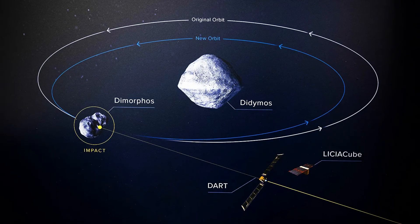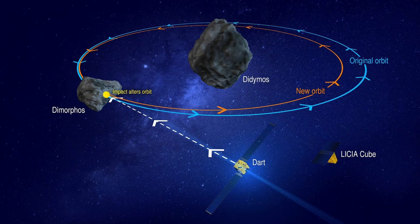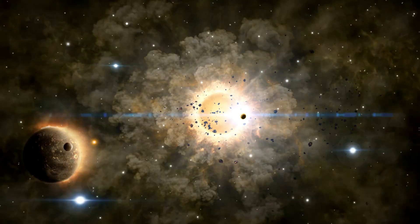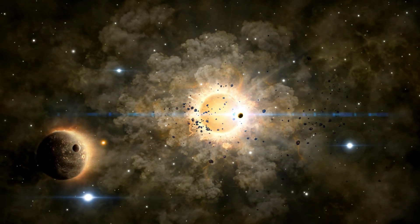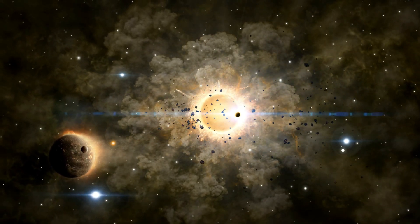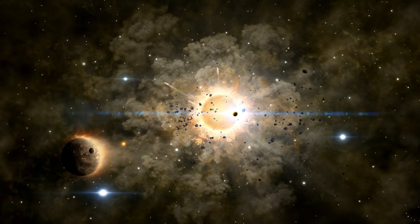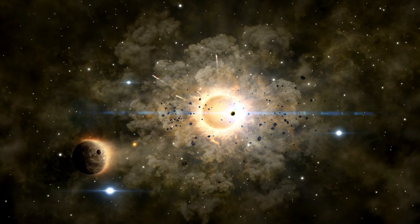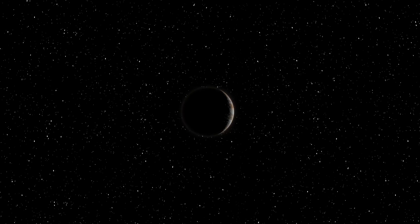NASA's DART mission in 2022 proved we can nudge an asteroid off course, but only if we spot it in time. And that's the scary part. Thousands of space rocks big enough to cause catastrophic damage are still uncharted. They could be heading our way right now, invisible until it's too late.